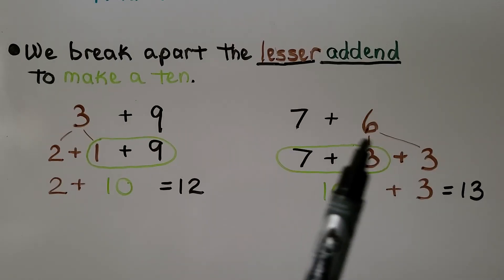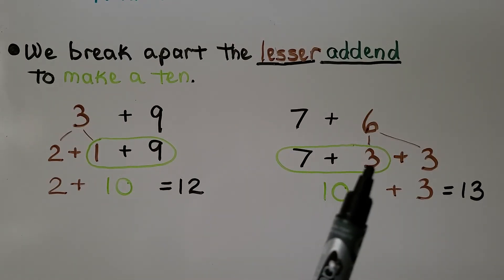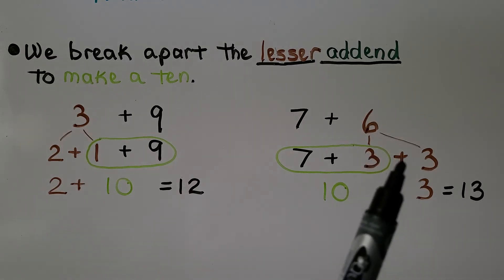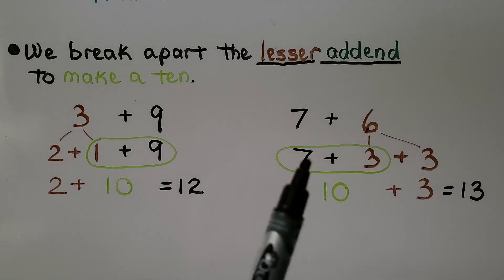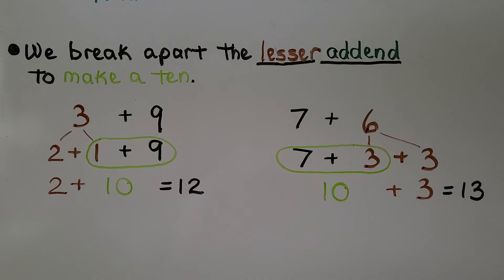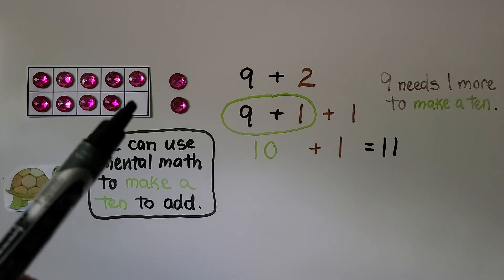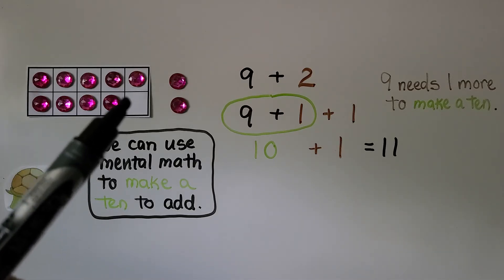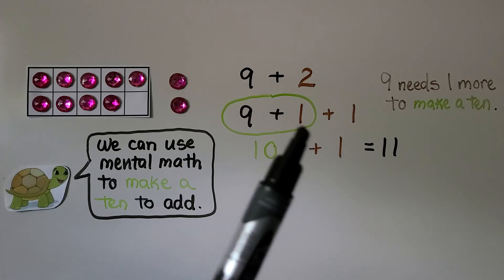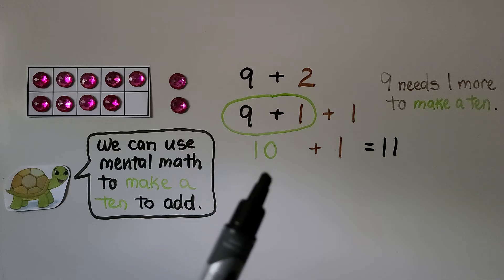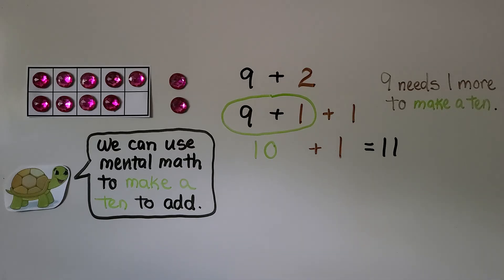Here we have 7 plus 6. 7 needs 3 more to be a 10. We break apart the 6 as a 3 plus 3. Now we have 10 plus 3. That's equal to 13. Here we have 9 plus 2. 9 needs 1 more to make a 10. We can break the 2 apart into a 1 plus 1. We give the 1 to the 9. Now we have 10 plus 1. That's equal to 11.